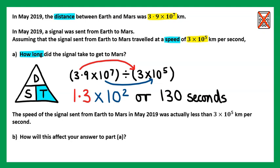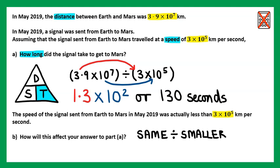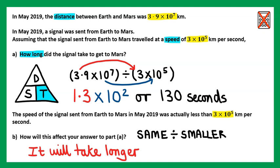Lastly, the speed of the signal sent from Earth to Mars in May 2019 was actually less than three times ten to the power of five kilometres per second. How will this affect your answer to part A? The distance remains the same, but we're dividing by a speed which has decreased — it's smaller. If you divide a number by a smaller amount, the result increases. A nice way of thinking about that is: if you had to share the same packet of sweets with fewer people, you'd end up with more sweets. So therefore it will take more time and it will take longer for the signal to get from Earth to Mars.